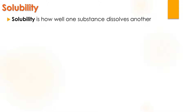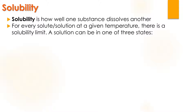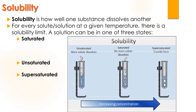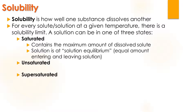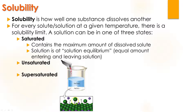Solubility is how well one substance will dissolve another. For every combination at a different temperature, there is a limit. You can have a solution in one of three different states: saturated, unsaturated, or supersaturated. In an unsaturated solution, solute is still dissolving into it. Saturated means it's reached its limit — it's full. The saturated solution contains the maximum amount of dissolved solute and is at equilibrium, with an equal amount of solute entering and leaving the solution at once. Here we have salt crystals where sodium chloride ions are entering and leaving the solid state at the same rate — it's an equilibrium.